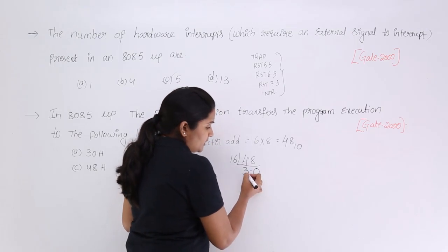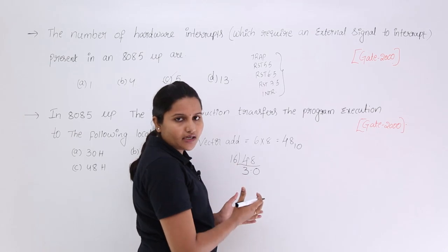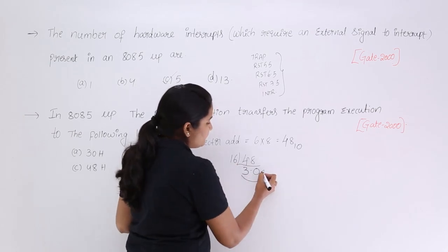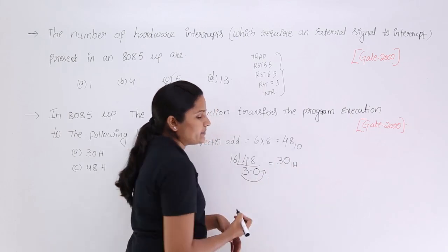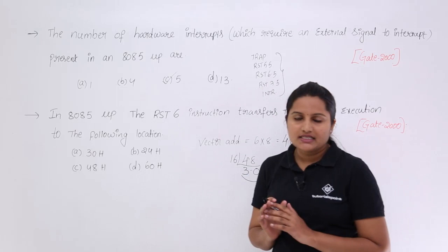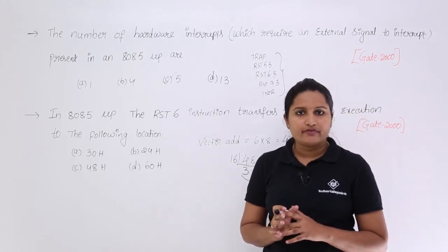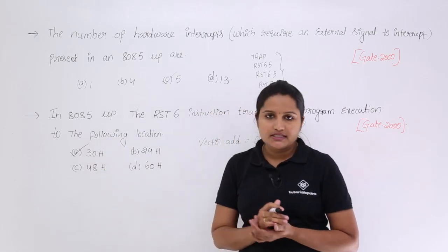Now this 3 is less than 16. No need for another division. You can take the result from here itself that is equivalent to 30 hexa. Now in these options when RST6 is executed in a 8085 microprocessor it will skip to the location 30 hex. This is the right option.